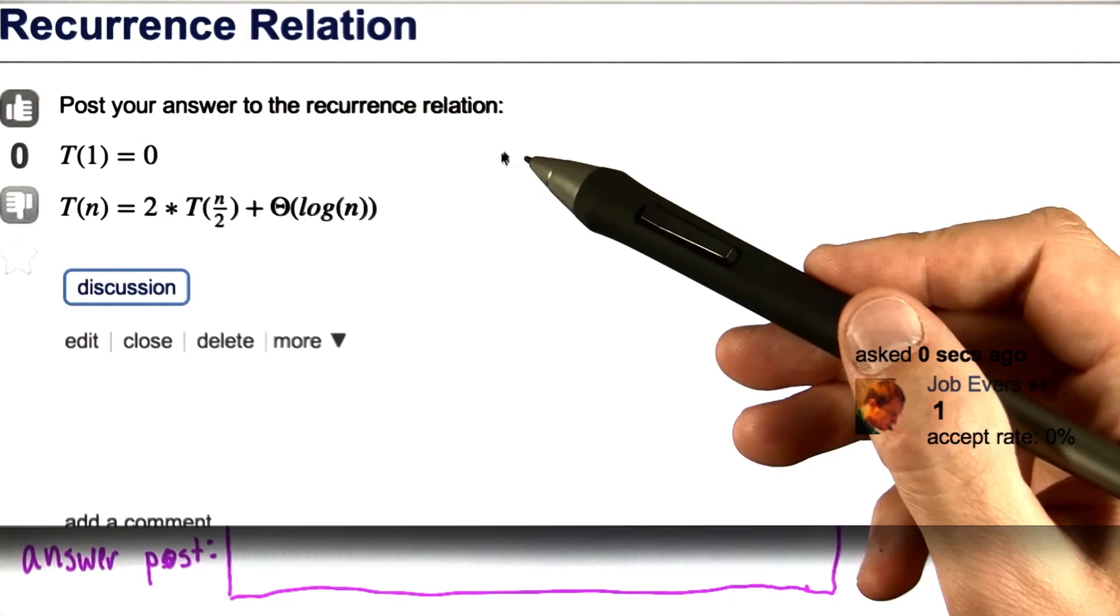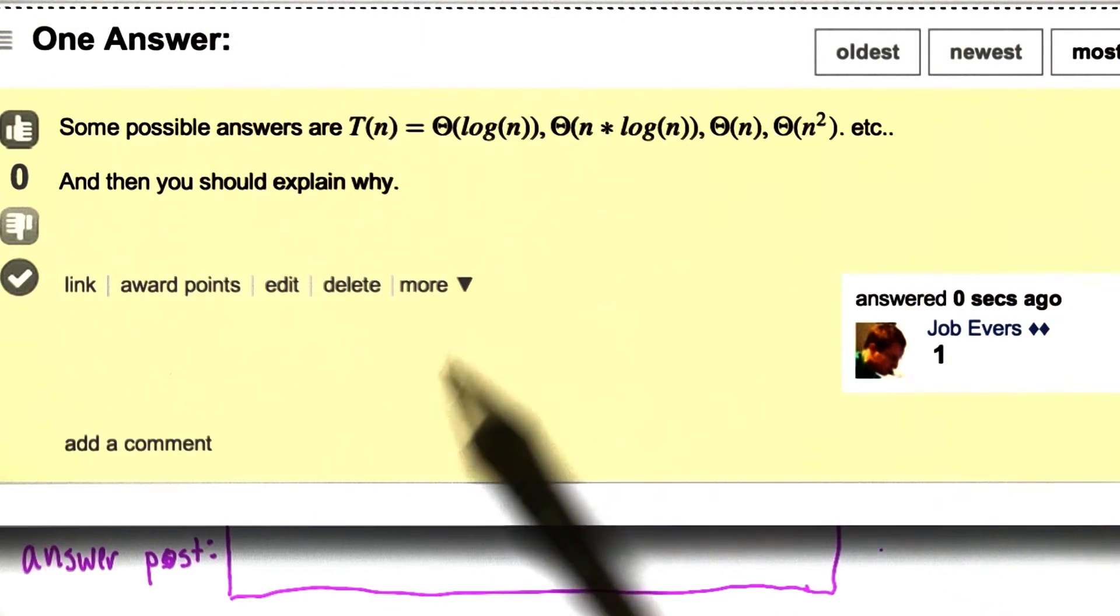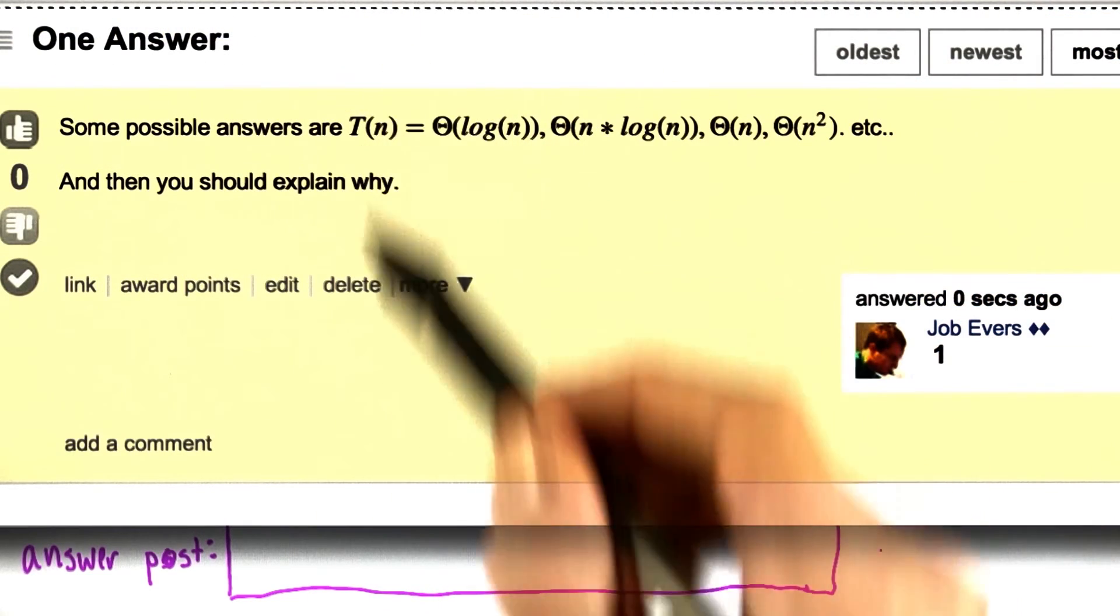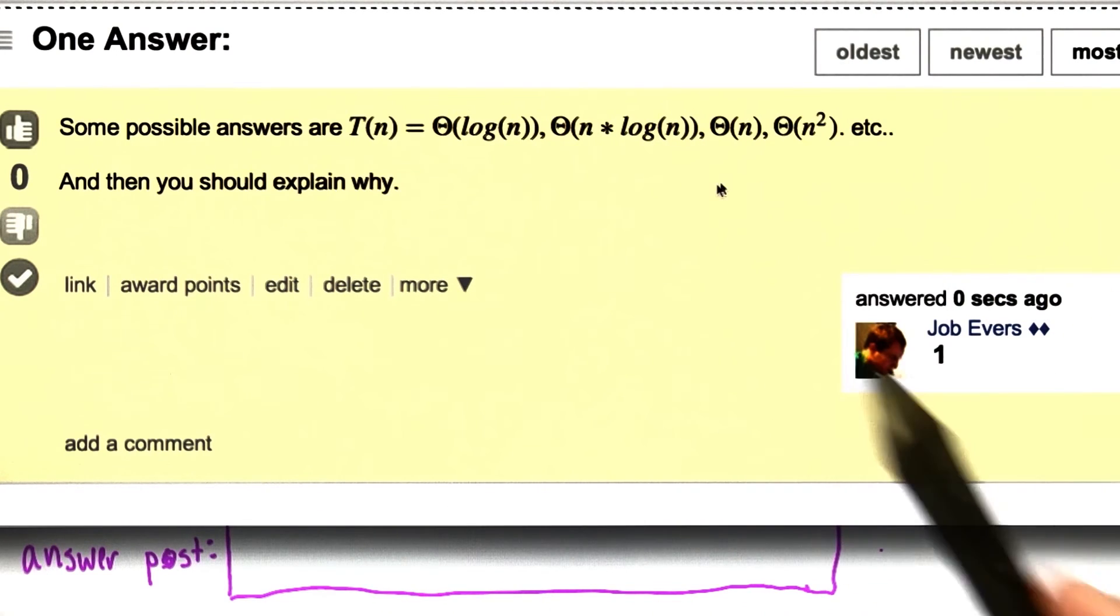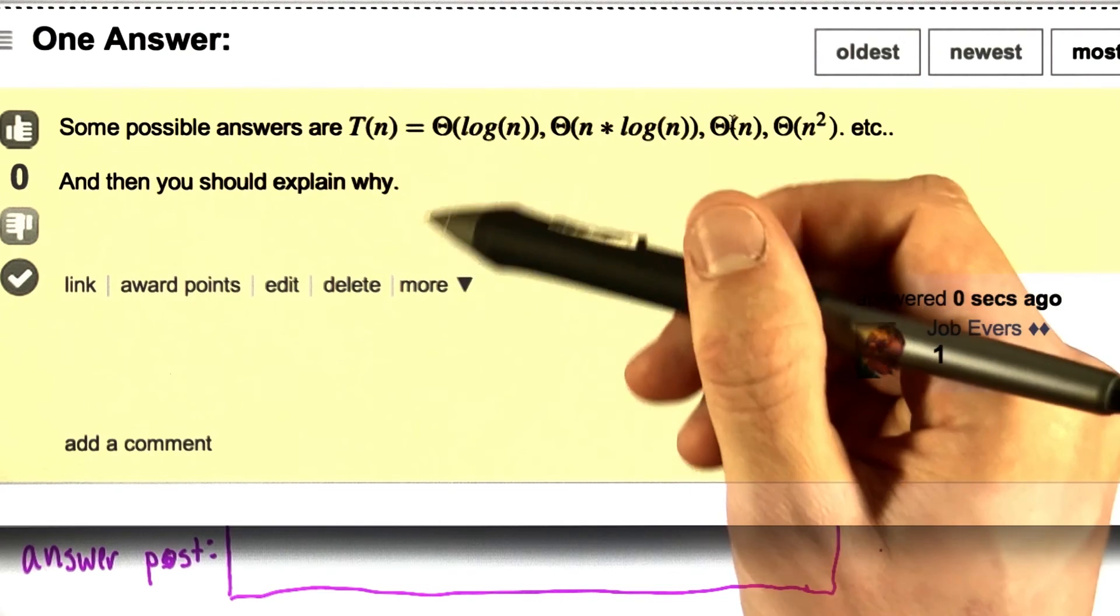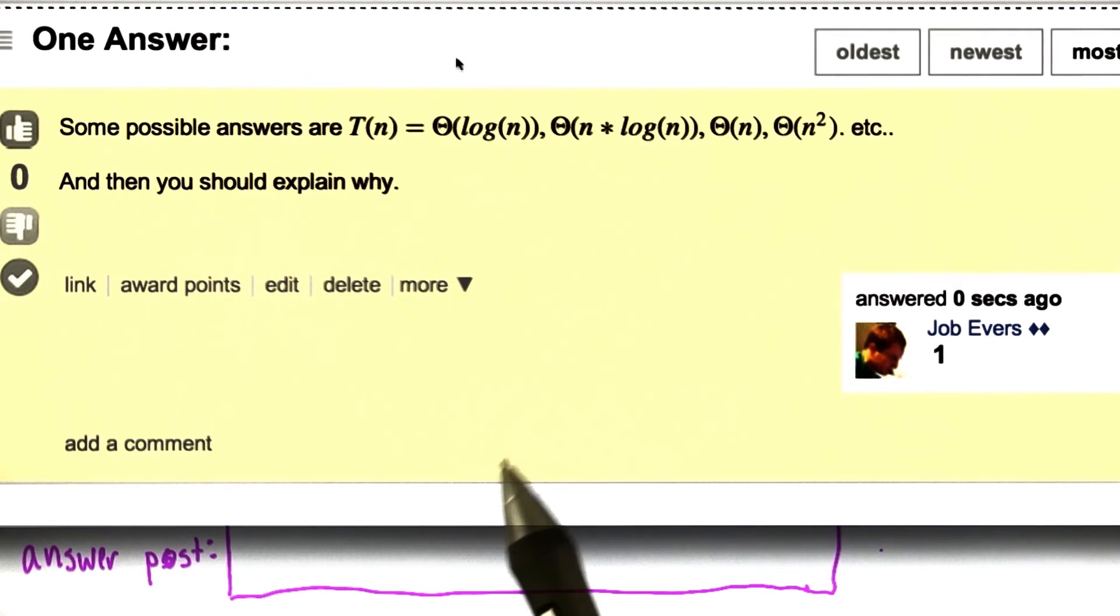So here's the question on the forum. And then you should write up your answer. Some possible answers might be that T of n is theta log n, theta n log n, theta of n, theta of n squared, or any other function. And then you should explain why you've answered like this.